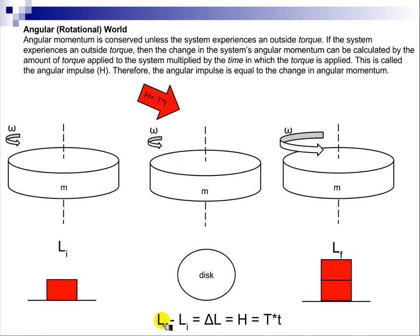So the difference in the angular momentum, delta L, is equal to this H, which is the angular impulse. And the angular impulse, we can find by taking the torque and multiplying that times the amount of time that it's applied.